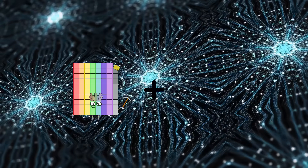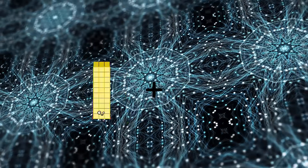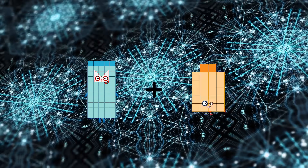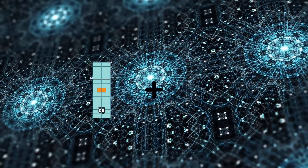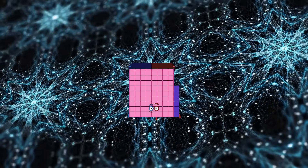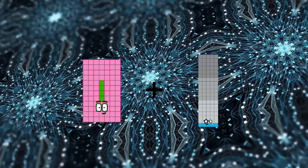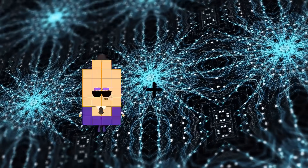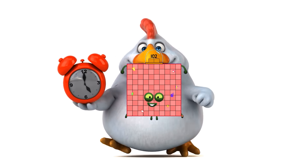79 plus 101 equals 180. 55 plus 50 equals 70. 52 plus 34 equals 86. 84 plus 95 equals 179. 63 plus 39 equals 102.